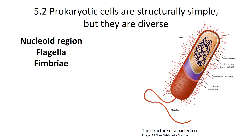Prokaryotes also have a flagella — that's a long tail — and you can see it on the bacteria to your right, and that helps them move through their environment. They also have another structure called the fimbriae, and the fimbriae allow these bacteria to attach to different surfaces. In fact, it's these fimbriae that can make bacteria very difficult to get rid of.